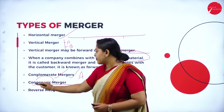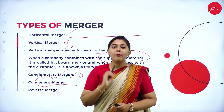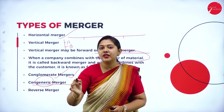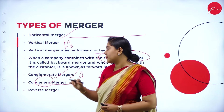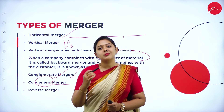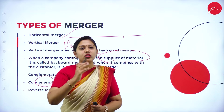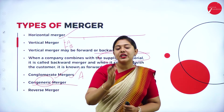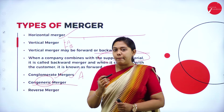Congeneric merger — the word itself says 'generic,' which means similar. They are of the same industry, such as the food industry or FMCG industry, but they are catering different product lines to the customer. Such a merger is called a congeneric merger. Both companies are in a similar industry with similar production activity, but their product or business lines are different — they cater different products. When such companies merge, it is called a congeneric merger.